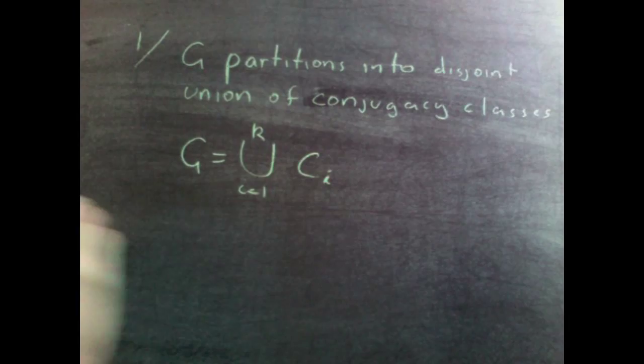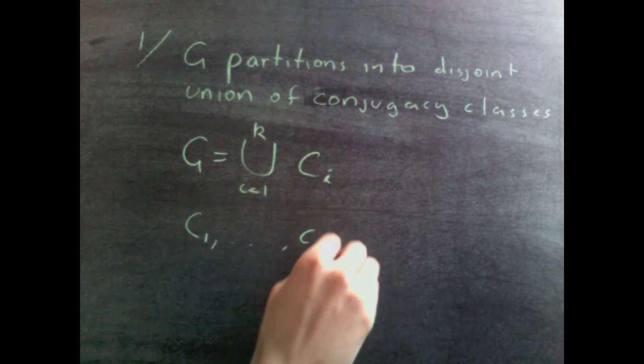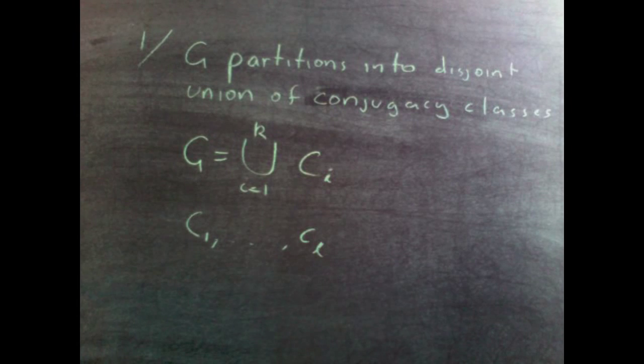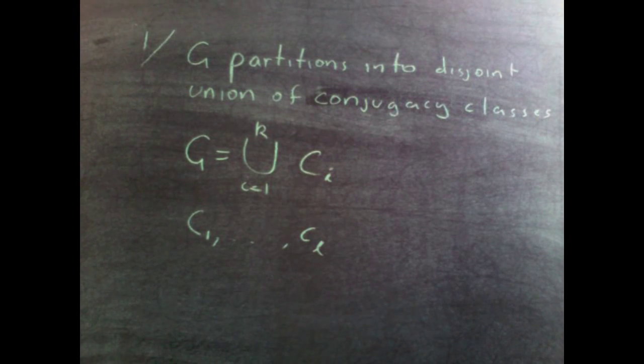Now what I'm going to do is to define it such that c1 to cl are one element conjugacy classes of g. So this is fine because the order isn't important, and I can just reorder and relabel.